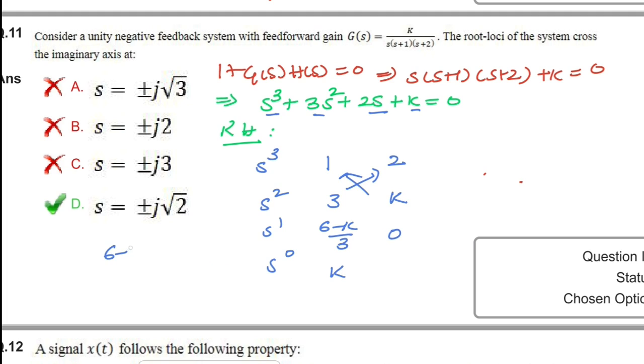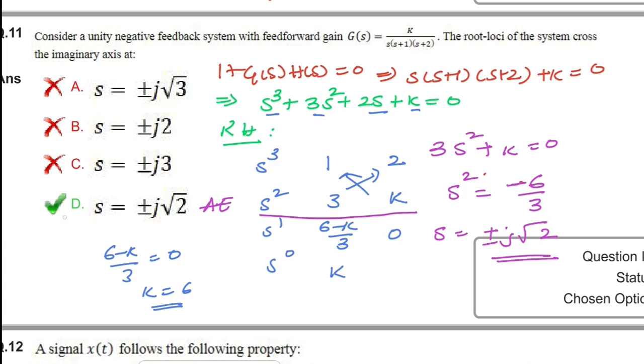This s¹ term: when (6-k)/3 equals 0, we'll get the imaginary axis. So k equals 6. Now to find the point where it crosses the imaginary axis, we take this auxiliary equation: 3s² + k = 0. So s² = -k/3 = -6/3, which gives s = ±j√2. D is the right answer for this question.